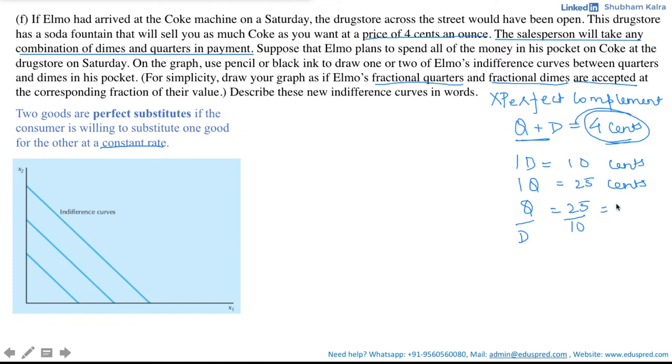So, we know that one quarter is equal to 25 cents and one dime is equal to 10 cents. Dividing that we get the ratio of 2.5 which means if Elmo wants one extra quarter with him, then he needs to give up 2.5 dimes or we can say that one quarter is equal to 2.5 dimes. Now, with this information, let's draw the indifference curves.